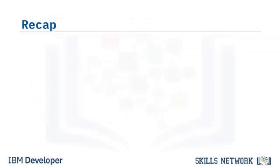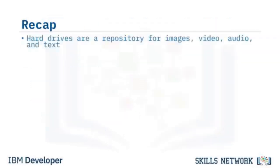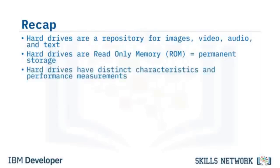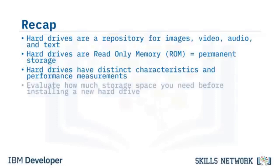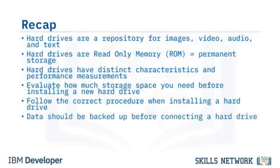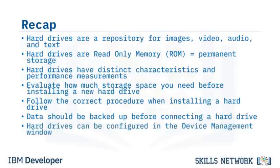In summary, hard drives are a repository for images, video, audio, and text, and are read-only memory (ROM) — permanent storage. Hard drives have characteristics including spin rate, transfer speed, and data capacity. Evaluate storage needs before installing a new drive, follow the correct installation procedure, and back up data beforehand. Hard drives can be configured in the Device Management window.